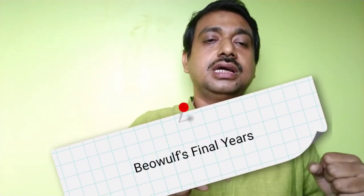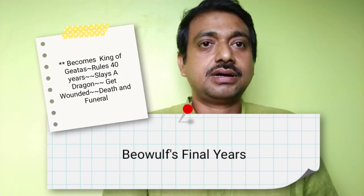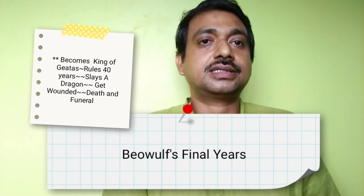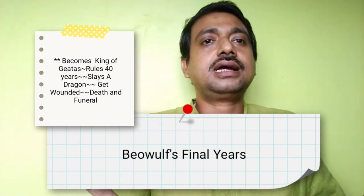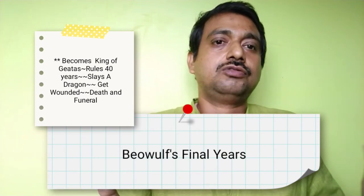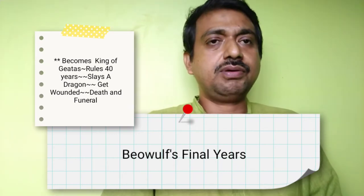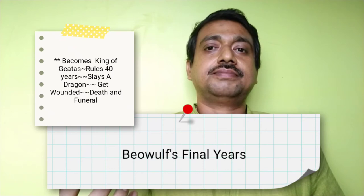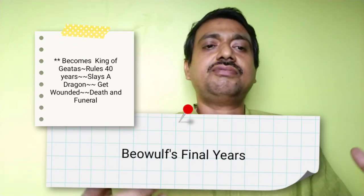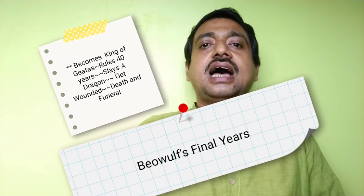Beowulf ultimately kills the monster after taming the unsafe and cold wild world of beasts — the inheritance of the outcasts, the exile, and the outsider. Beowulf gets honors and rewards in his homeland, having done something truly heroic by killing both the monster and the mother. He later becomes king of the Geats for his heroic deeds and rules for many years. In old age, Beowulf once again journeys toward an unknown world to fight a new battle, despite everyone requesting him not to go at his age.